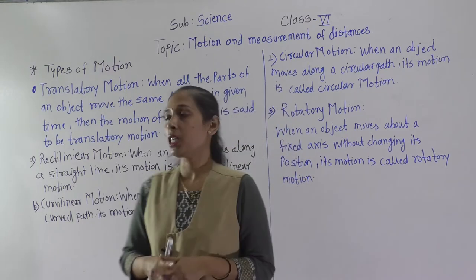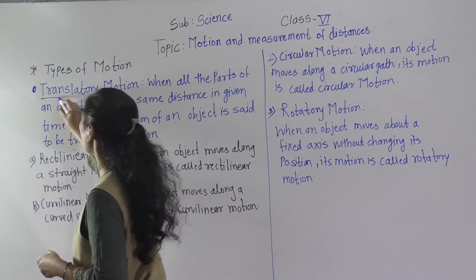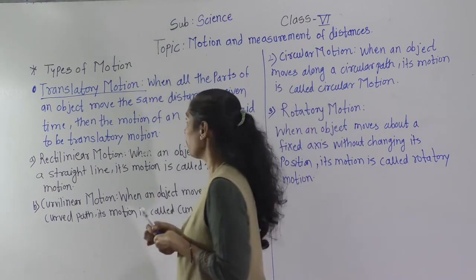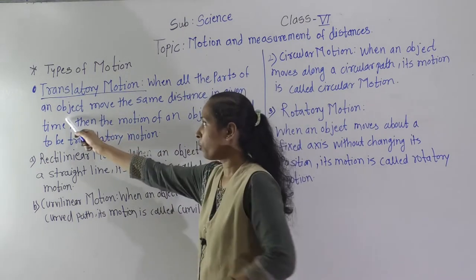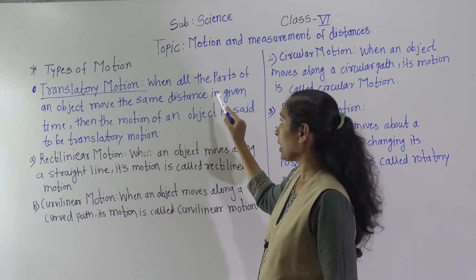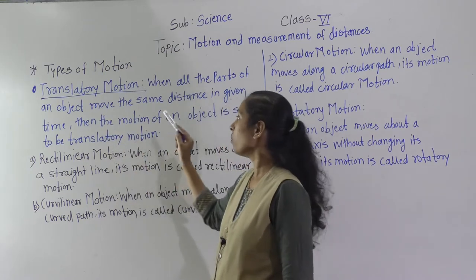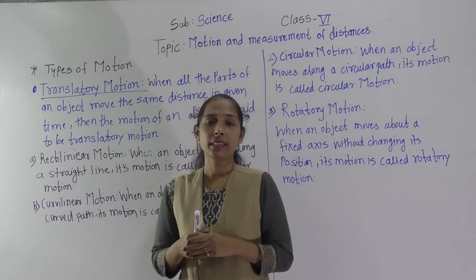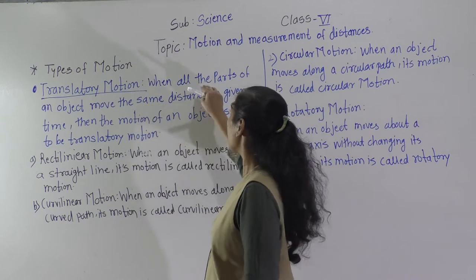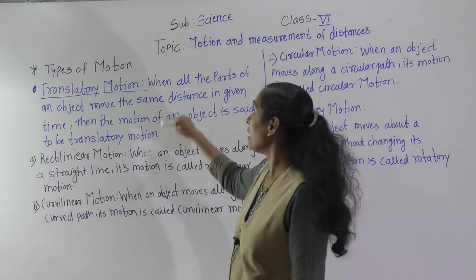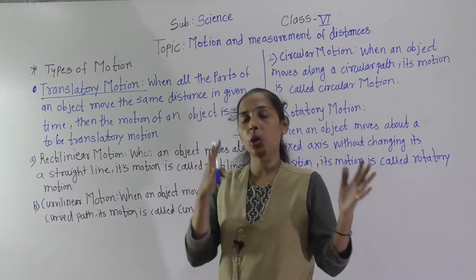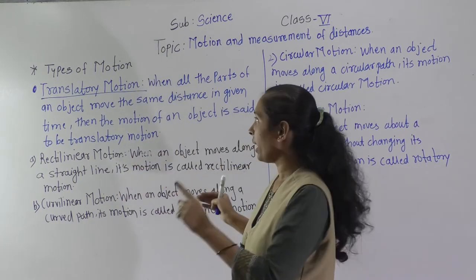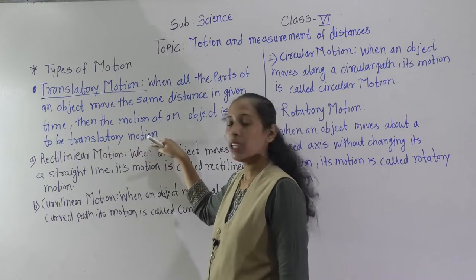The first type of motion is Translatory Motion. What is meant by translatory motion? When all the parts of an object move the same distance in a given time, then the motion of that object is said to be translatory motion. All the parts of the object move the same distance at the given time — that motion is called translatory motion.